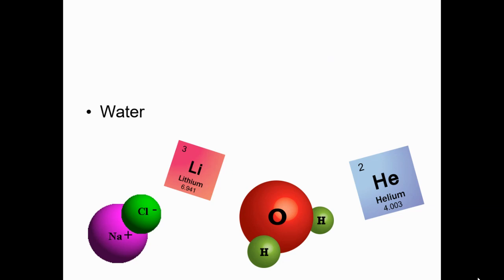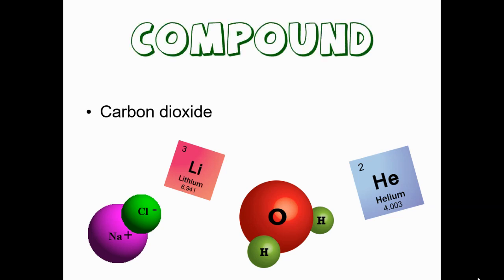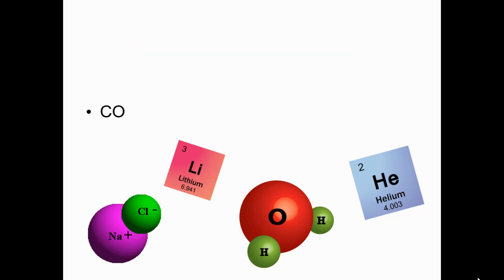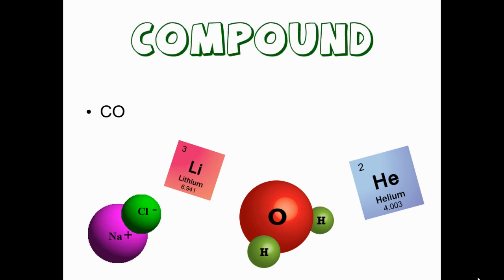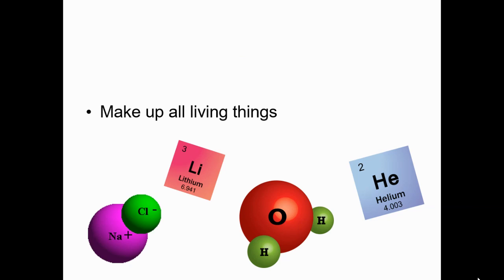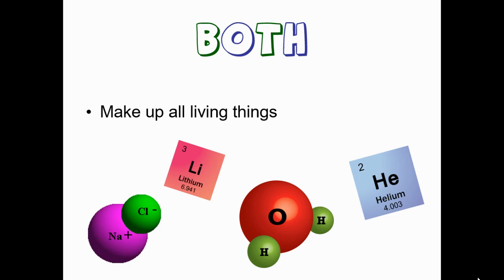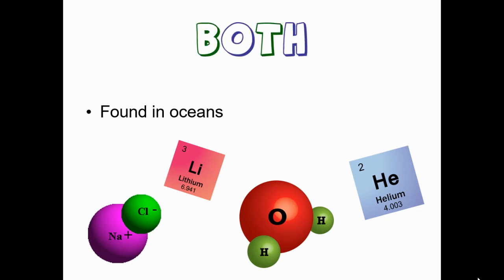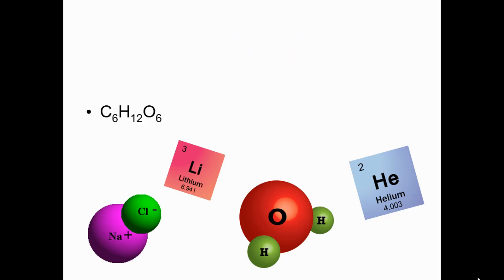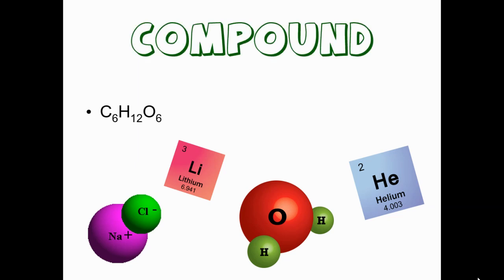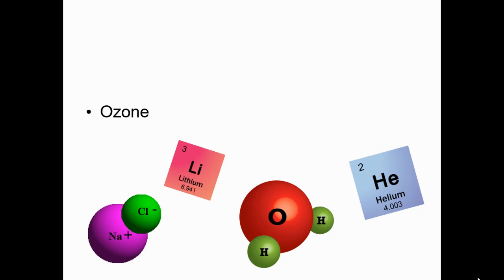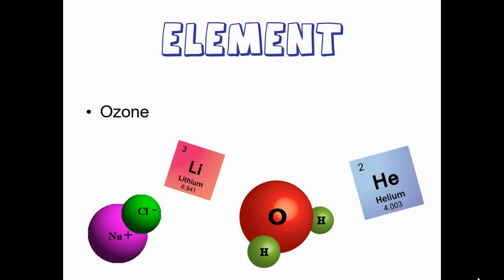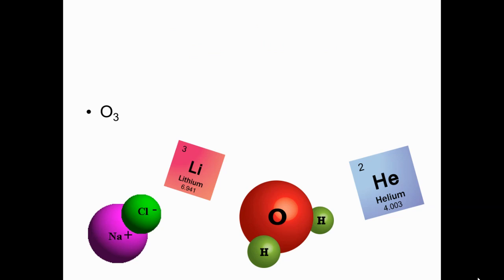Water is an example of a compound. Carbon dioxide is an example of a compound. Things that make up all living things are both elements and compounds. Things found in oceans are both elements and compounds. C6H12O6 is a representation of a compound. Ozone is an example of an element. O3 is a representation of an element.